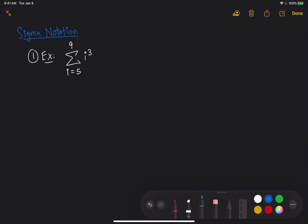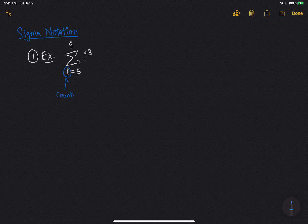And what this means is that i is a counter, or a lot of people call it an index. And this counter starts at 5. And it ends at 9. So you count 5, 6, 7, 8, 9.